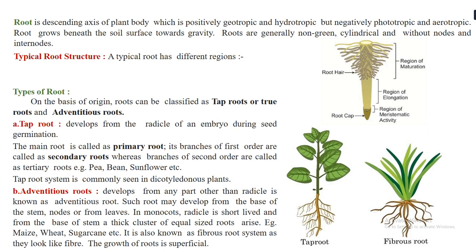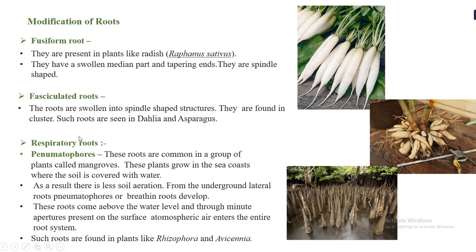Adventitious roots develop from any part other than the radicle — it can be the base of the stem, nodes, internodes, or the base of the leaf. They show fibrous, cluster-like growth rather than primary giving rise to secondary and tertiary roots. They just appear as clusters, giving a fibrous appearance. Adventitious roots are seen in monocots such as maize, wheat, sugarcane, and coconut.